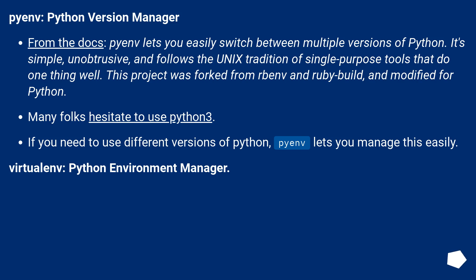PyEnv is a Python version manager. From the docs: PyEnv lets you easily switch between multiple versions of Python. It's simple, unobtrusive, and follows the Unix tradition of single-purpose tools that do one thing well. This project was forked from rbenv and ruby-build, and modified for Python. Many folks hesitate to use Python 3. If you need to use different versions of Python, PyEnv lets you manage this easily.